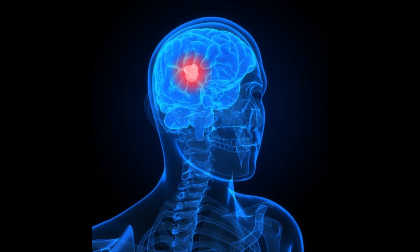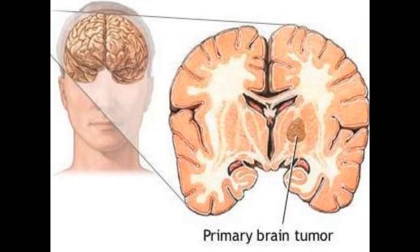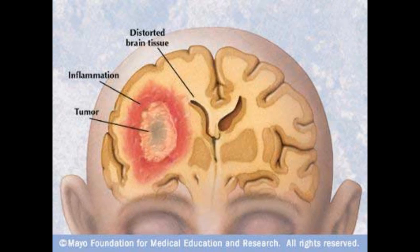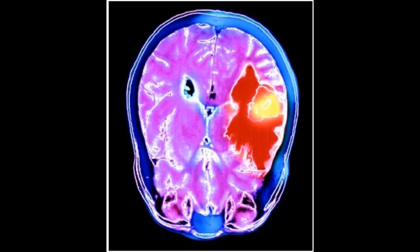A brain tumor is an abnormal growth of cells within the brain, which can be cancerous or non-cancerous. Brain tumors are categorized as either primary or secondary. Primary brain tumors originate in the brain and can be either benign or malignant. Secondary brain tumors, also known as metastatic tumors, are more common and are malignant tumors.